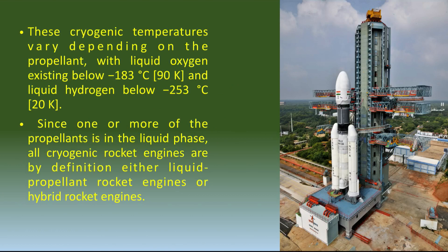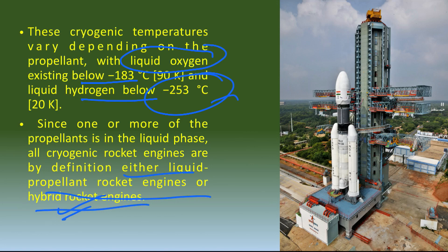Cryogenic temperatures depend on the propellant. For example, liquid oxygen exists below minus 183 degrees Celsius, and liquid hydrogen below minus 253 degrees Celsius. Isliye bhi hamen bahut high-end technology chahiye, kyunki hydrogen ko minus 253 degrees Celsius mein store karna apne aap mein ek bahut bada challenge hai. Jab hum usko liquid form mein convert kar dete hain to usko carry karna aasan ho jaata hai. All cryogenic rocket engines are by definition either liquid propellant rocket engines or hybrid rocket engines.